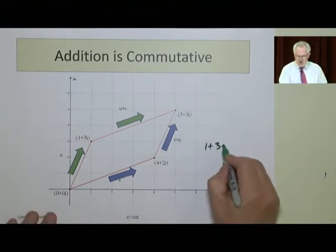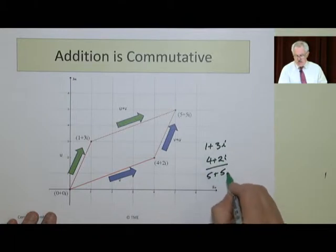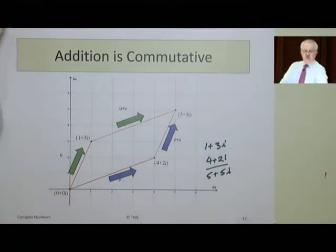So 1 plus 3i, 4 plus 2i is 5 plus 5i. Whether you add up one or the other first, it doesn't matter.